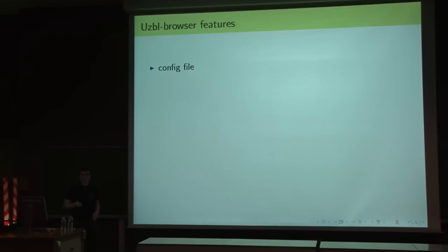So some features. It comes with a default configuration file so that you have key bindings and that you have your scripts loaded the way they're supposed to so that it works out of the box. You have an event manager, which is just a Python script, listening on a socket, so that uzbl-core can send its events to it.